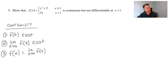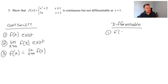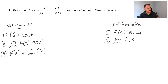We also know a function is differentiable if these three criteria are met: the derivative at a exists, the limit as x approaches a of the derivative of our function exists, and those two values are equal to one another.